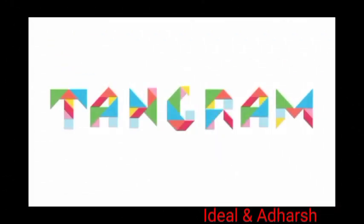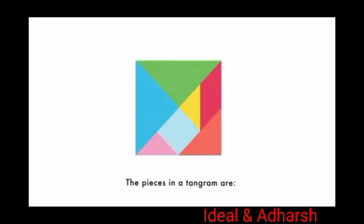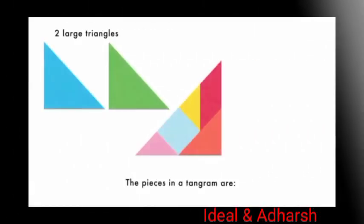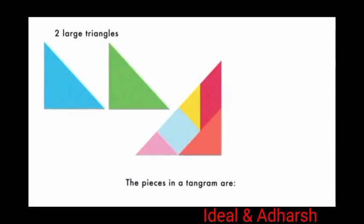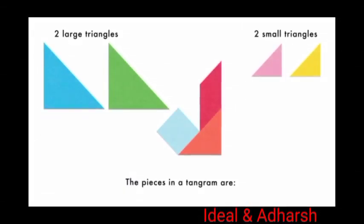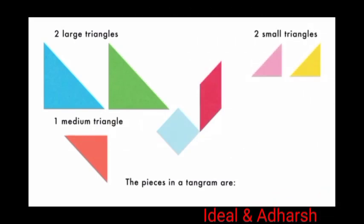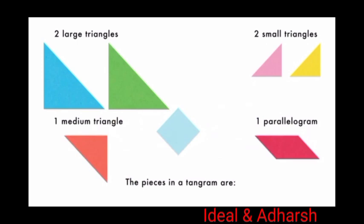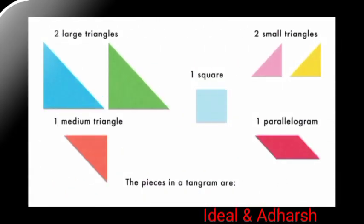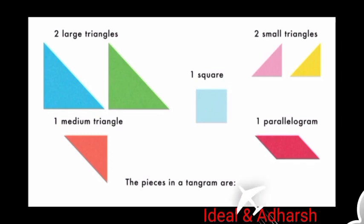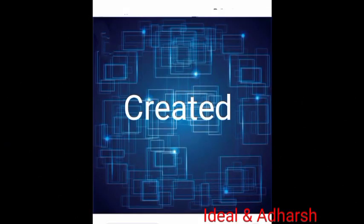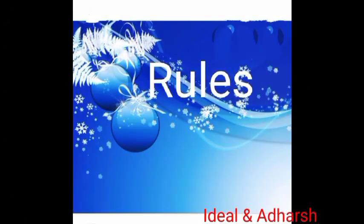The pieces in a tangram are: two large triangles, two small triangles, one medium triangle, one parallelogram, and one square. There are over 6500 shapes and pictures that can be created using the tangram puzzle.